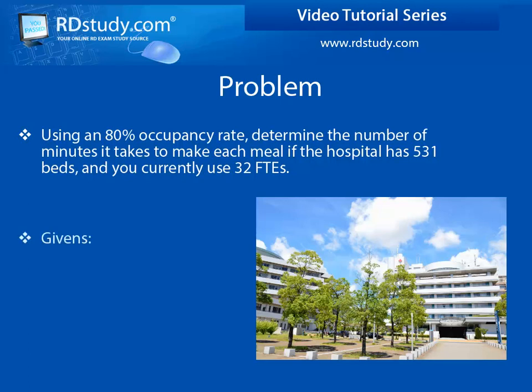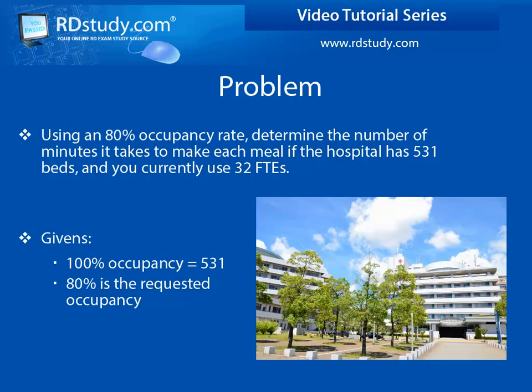Always break out the givens that you need. 531 represents 100% occupancy. 80% occupancy is what the manager wants. You currently use 32 FTEs to get the job done.